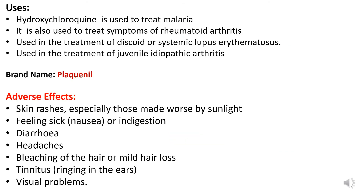Uses of hydroxychloroquine: it is used in the treatment of malaria, to treat symptoms of rheumatoid arthritis, in the treatment of discoid or systemic lupus erythematosus, and in the treatment of juvenile idiopathic arthritis. The brand name for hydroxychloroquine is Plaquenil. Adverse effects include skin rashes especially on sun exposure, nausea or indigestion, sometimes diarrhea, headache, bleaching of hair or mild hair loss, tinnitus, and visual problems.